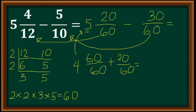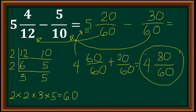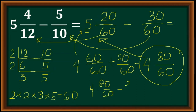Let's finalize: copy the whole number 4, and 60 plus 20 is 80, over 60. This value is equivalent to our original minuend. So we have 4 and 80 over 60 minus 30 over 60.